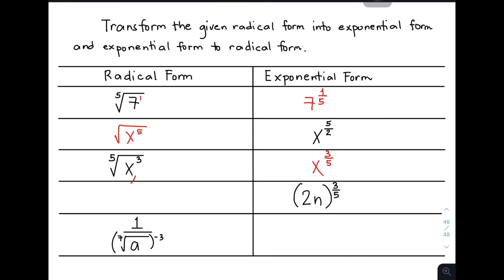Let's move on with item number 4. We have the quantity of 2n raised to 3 over 5. Draw a radical sign — the denominator is 5, so that will be your index. And this base, 2n, will be here as your radicand with exponent of 3. We can apply the power rule wherein we distribute the exponent, which is equivalent to the fifth root of 8n raised to 3. So that is the converted form of 2n raised to 3 over 5.